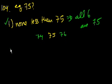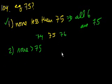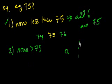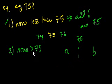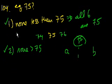Statement 1 alone is sufficient. Statement 2 says none of the six numbers is greater than 75. It's the same argument: if some number A is less than 75, I'd need a number greater than 75 to balance it, but statement 2 rules that out. So all six numbers must equal 75. Both statements are independently sufficient, each telling us all six numbers are equal to 75. The answer is D.